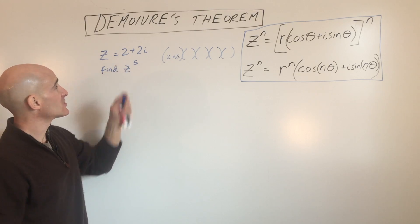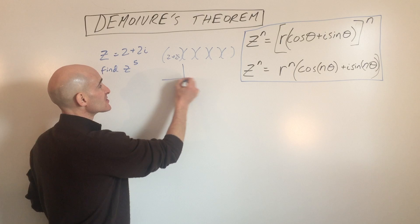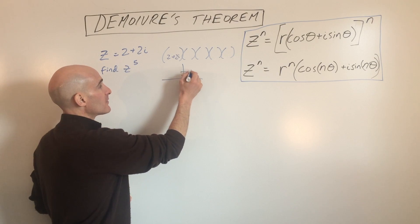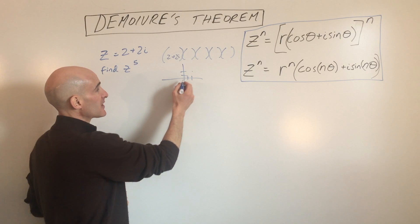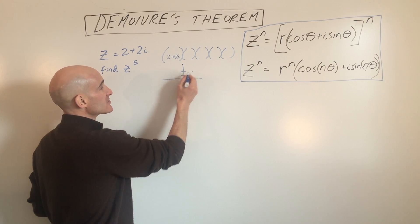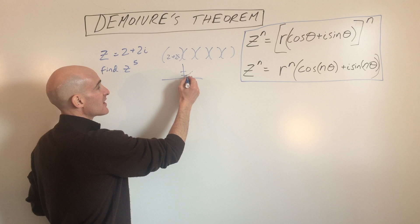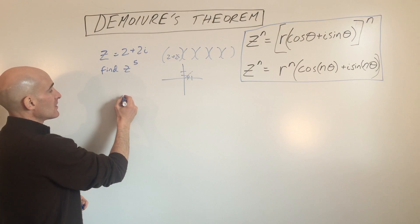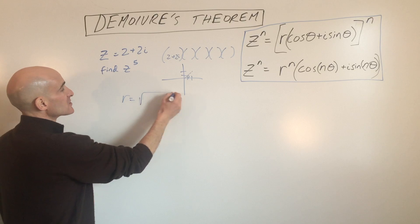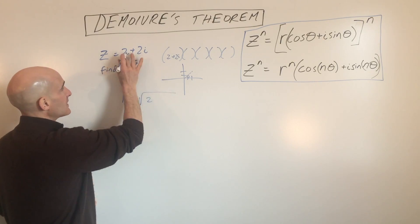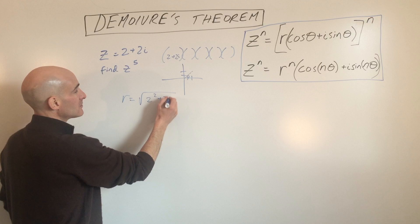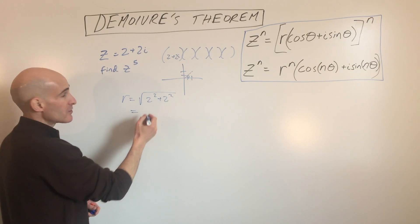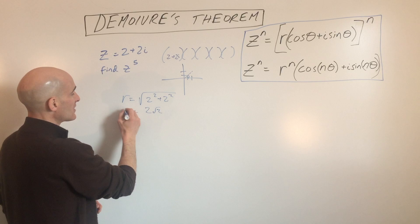We're going to convert this to trigonometric form. I like to draw a diagram — 2 plus 2i means going right 2 and up 2. There's the point in the complex plane, the r value, and the angle. We calculate r equals the square root of a squared plus b squared, which equals the square root of 4 plus 4, which is the square root of 8, or 2 root 2.